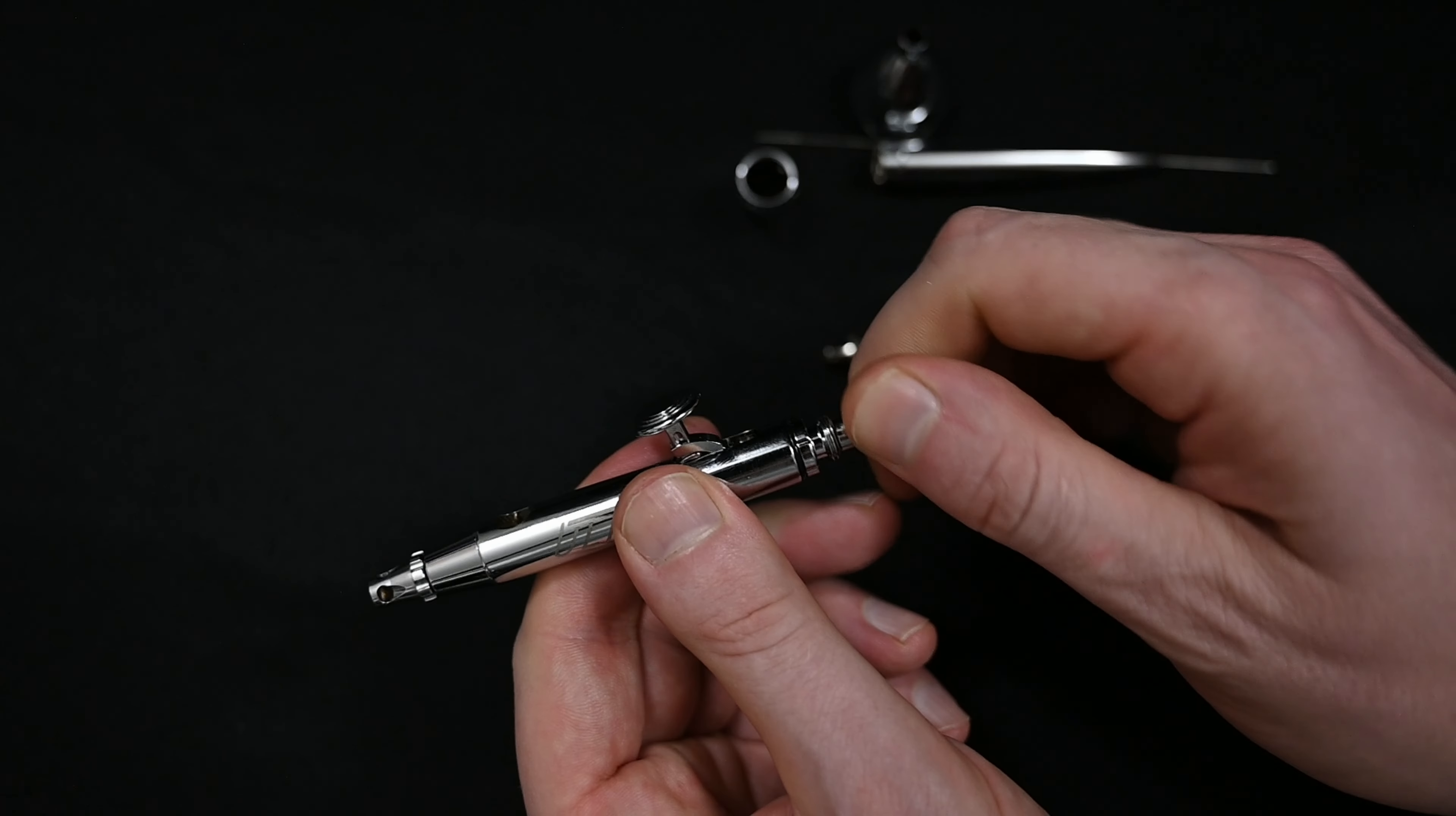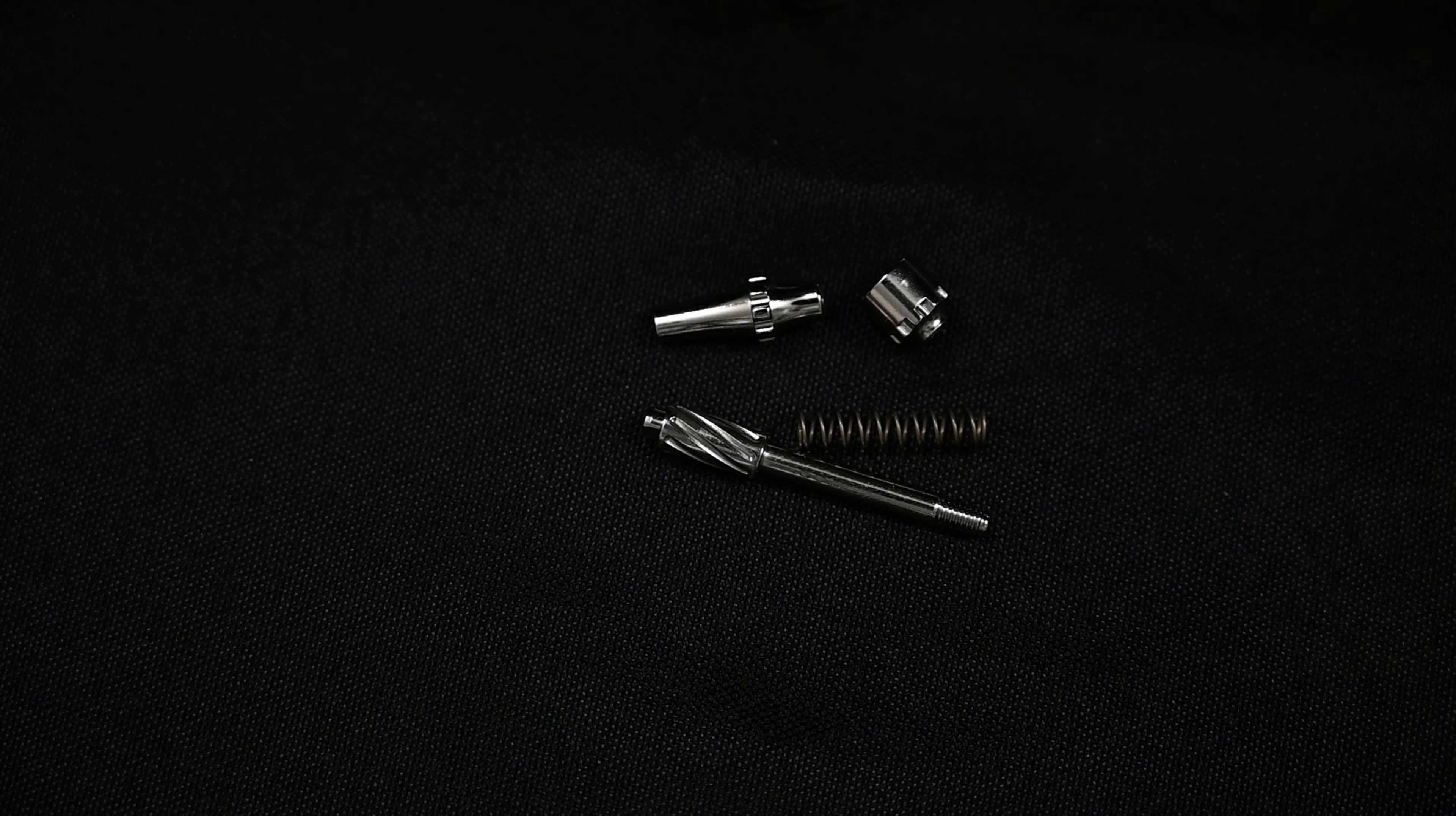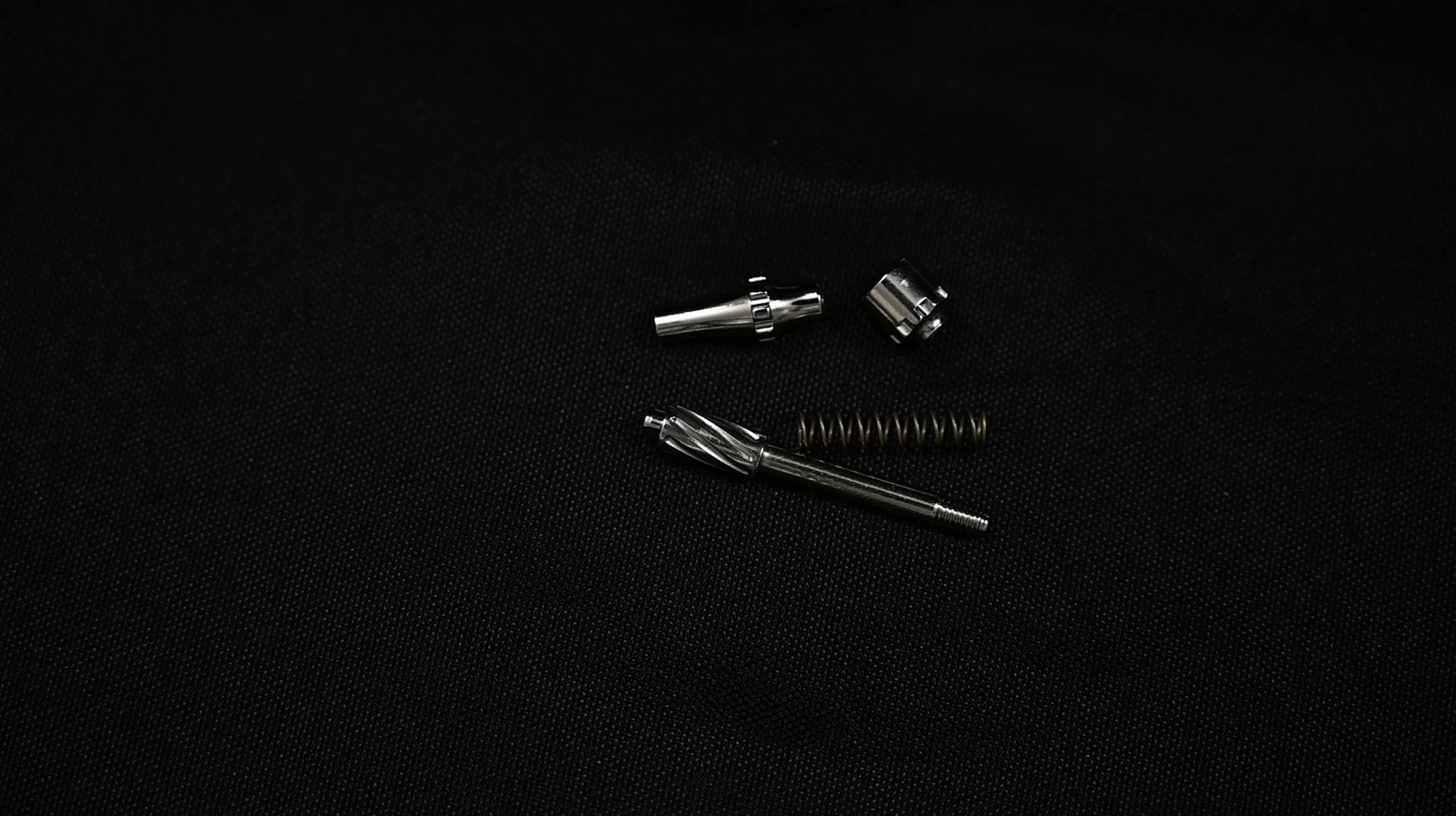To remove this, all I want to do is unscrew this nut, and once this is off, you'll notice that there's a spring and the needle chucking guide. You're able to pull these right out of the back of the airbrush, and that's the entire rear assembly. Very simple, easy to break down. These parts are just so nicely machined and manufactured, it's rare to see internal parts this nice from any other airbrush brand.